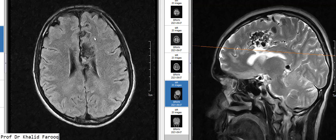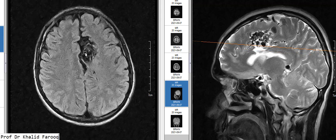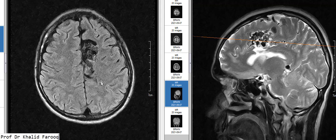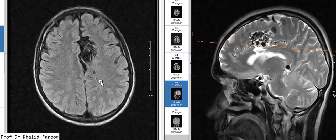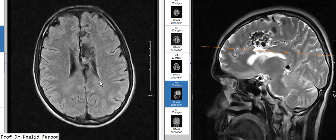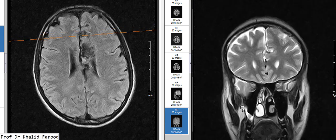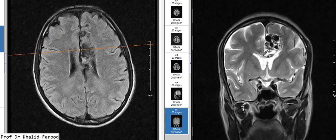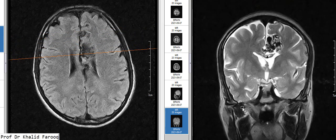Let's see the FLAIR sequence. Here we can see the major portion in and around the AVM is unremarkable. There is no hemorrhage in the present study. We can also see the coronal T2-weighted sequence, where we can see the anterior cerebral artery — this is the bunch of vessels just above the corpus callosum.